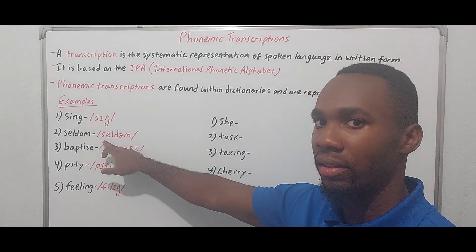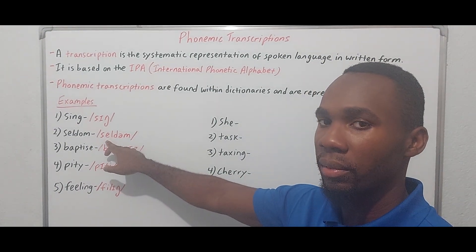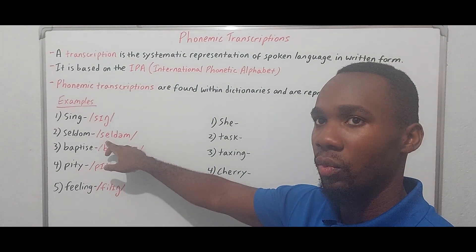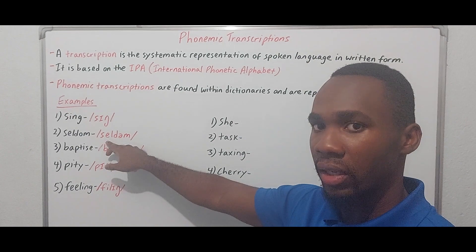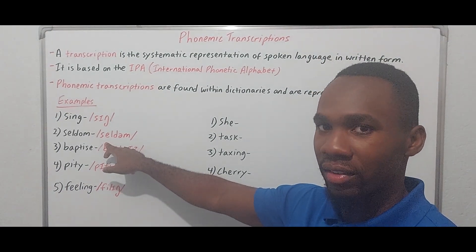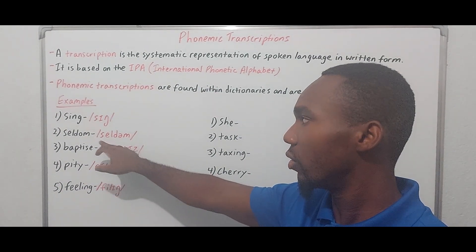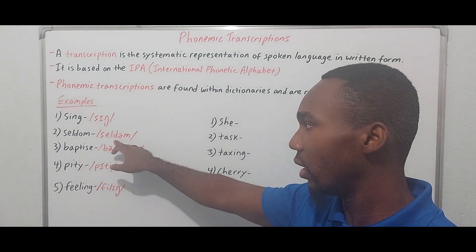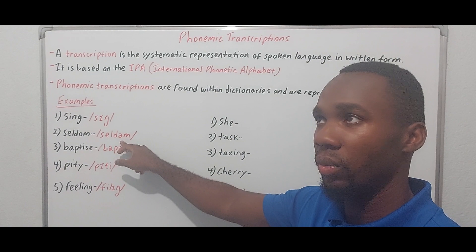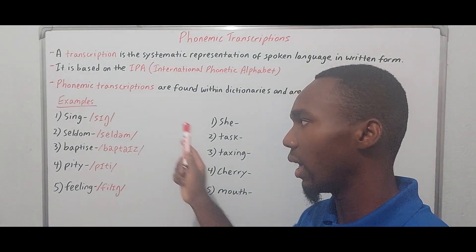Next: 'seldom.' We start with S, then the vowel A — a long vowel sound you would find in words like 'bake' or 'cake' — then L, then D, and finally a reduced vowel sound heard at the end of the word. So we have 'seldom' — all the sounds found within that word.